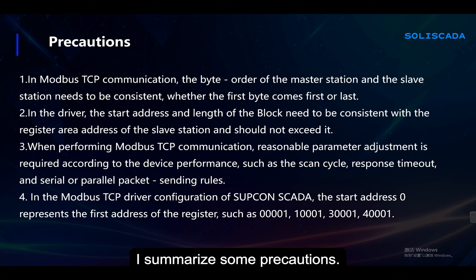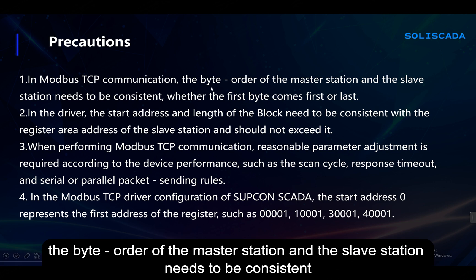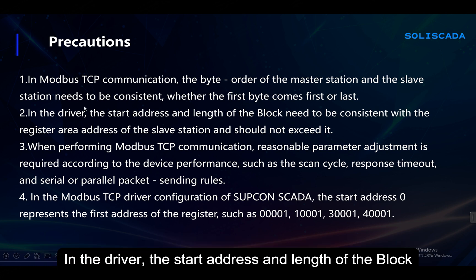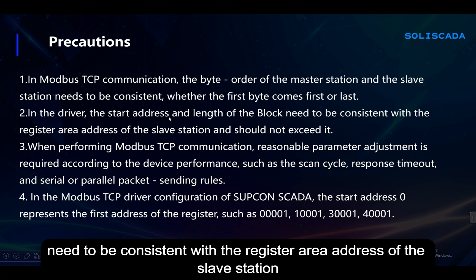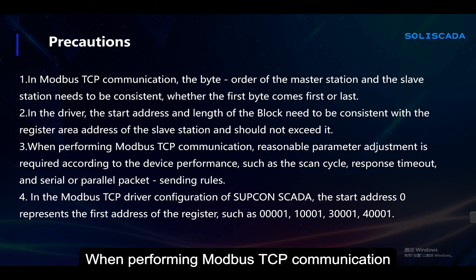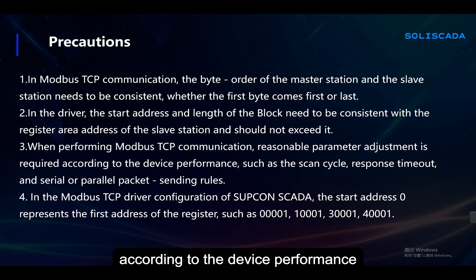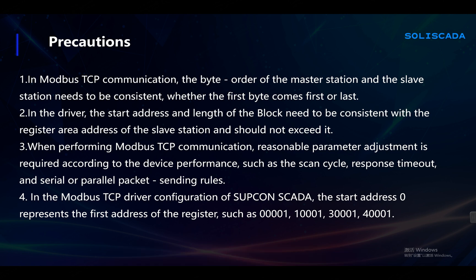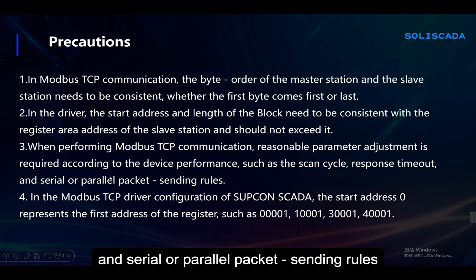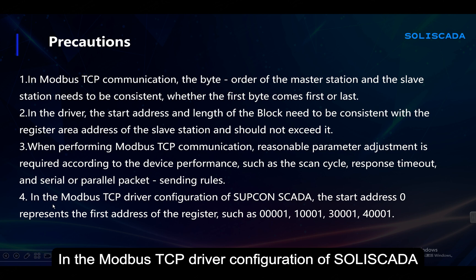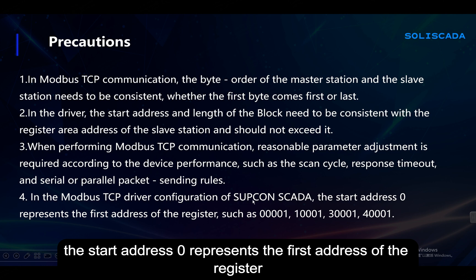I have summarized some precautions. In Modbus TCP communication, the byte order of the master station and the slave station needs to be consistent. In the driver, the start address and length of the block need to be consistent with the register area address of the slave station and should not exceed it. When performing Modbus TCP communication, reasonable parameter adjustment is required according to the device performance, such as the scan cycle and serial or parallel packet sending rules.